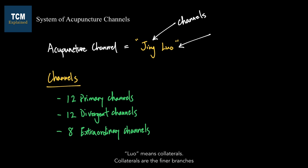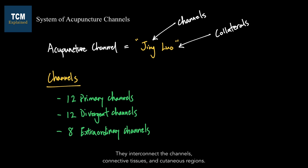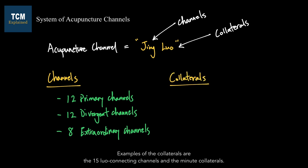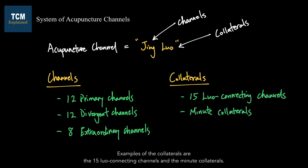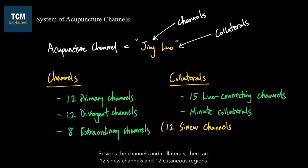Luo means collaterals. Collaterals are the final branches of the channel system that are located more superficial in our body. They interconnect the channels, connective tissues, and cutaneous regions. Examples of the collaterals are the 15 lower connecting channels and the minute collaterals. Besides the channels and collaterals, there are 12 sinew channels and 12 cutaneous regions.